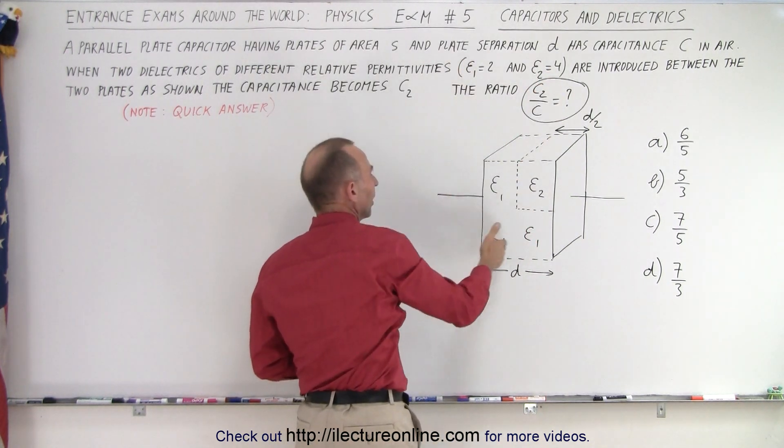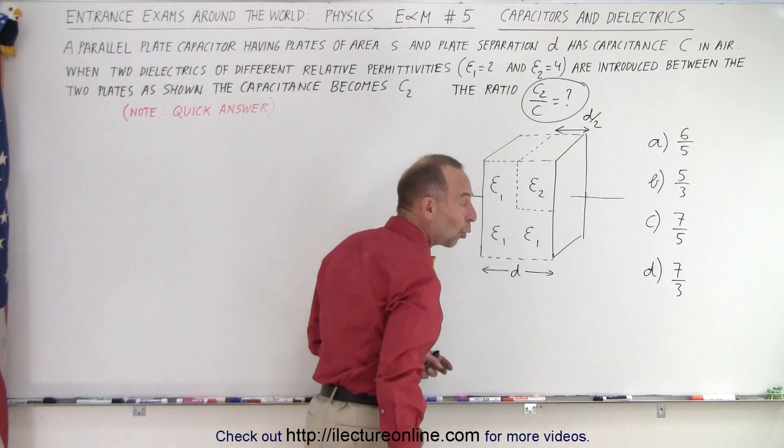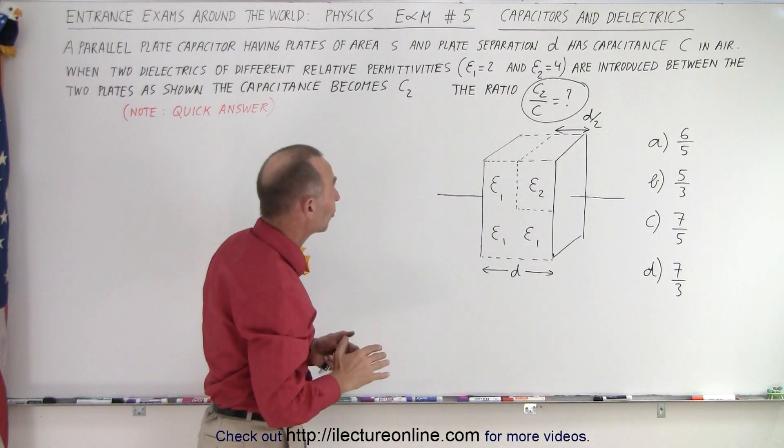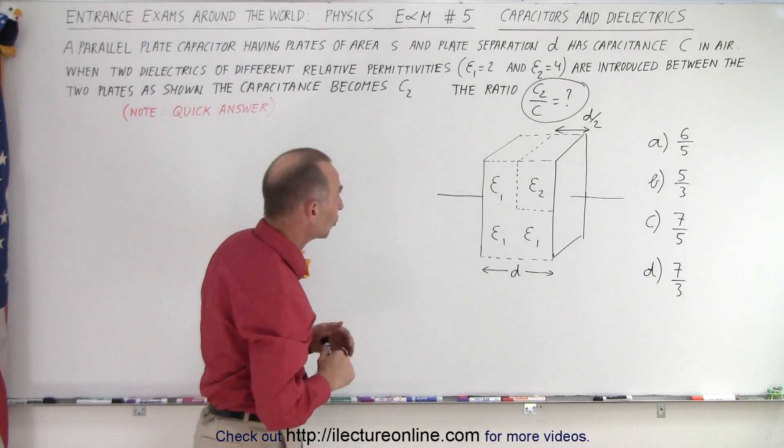The other one that occupies three quarters of the space between the plates has relative permittivity equal to 2.